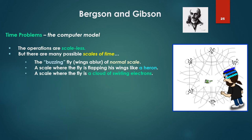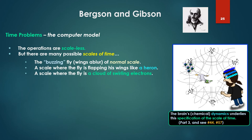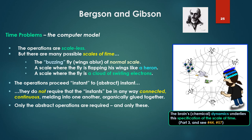The operations are scaleless. But there are many possible scales of time. You have the buzzing fly. Its wings perceived as a blur at normal scale. But you could have a scale where the fly is flapping its wings like a heron, or a scale where the fly has become a cloud of swirling electrons. Again, what we'll see - the brain's chemical dynamics, the dynamics underlying the reconstructive wave, underlies the specification of the scale of time. It's interesting, like number 44 and number 57 with respect to LSD. But the operations, the computer operations, these abstract operations, proceed instant to abstract instant. They do not require that the instants be in any way connected, continuous, melding into one another, organically glued together. Only the abstract operations are required and only these.